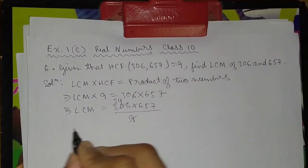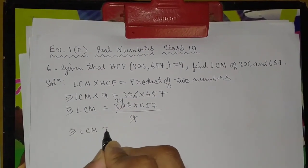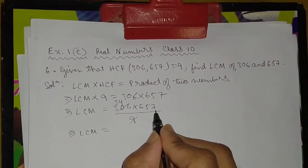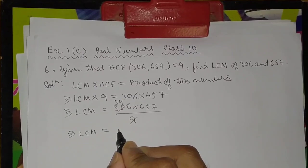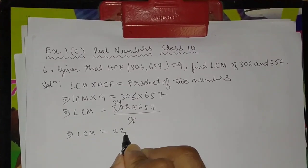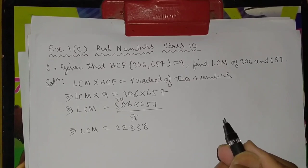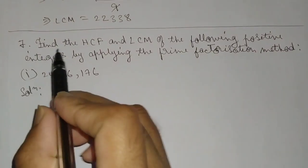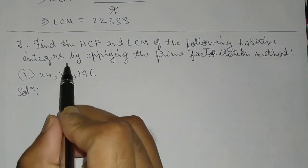This implies LCM equals 34 into 657. This implies LCM is equal to 34 into 657.